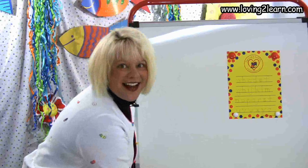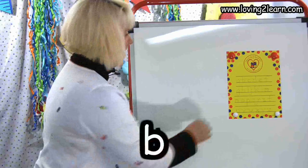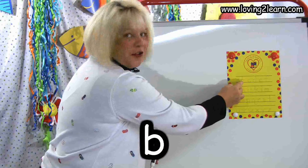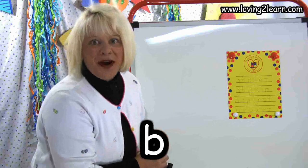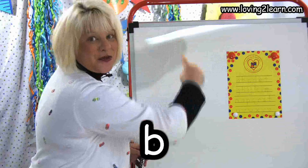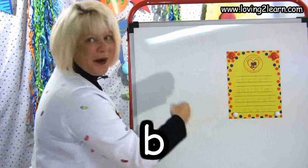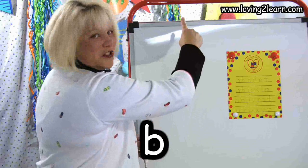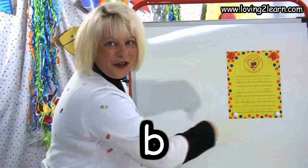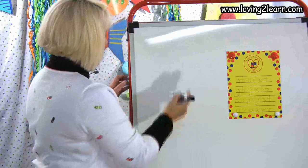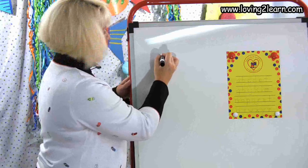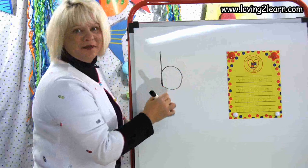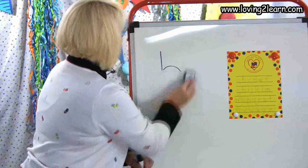The next letter is the letter B. Straight line down, and we circle around the bottom. Do it in the air with me: straight line down, circle around the bottom. Let's do it on the whiteboard: straight line down, circle around the bottom. We'll erase that B.